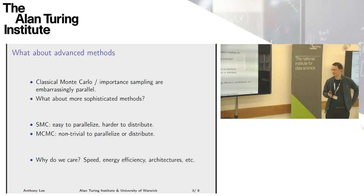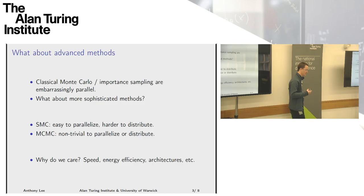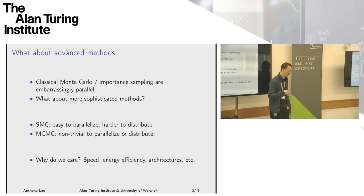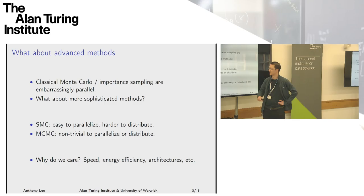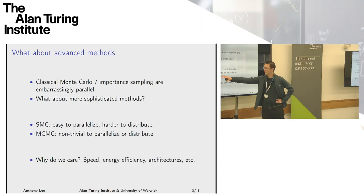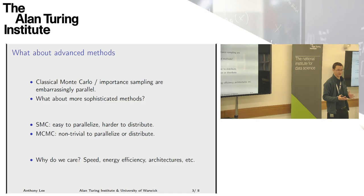There are many problems for which it's basically nearly impossible to come up with a good importance distribution mu such that the accuracy of your expectation approximations is reasonably small. In those cases, at least in the absence of concerns about parallelism, people use more sophisticated methods involving more sophisticated interactions between the random variables. For example, SMC or sequential Monte Carlo methods — they're kind of easy to parallelize and harder to distribute. And Markov chain Monte Carlo: Leonardo just talked about one which is also parallel because it's kind of like a parallel tempering scheme. MCMC is, at least in its basic form, non-trivial to parallelize or distribute, but there are versions that are quite parallel.